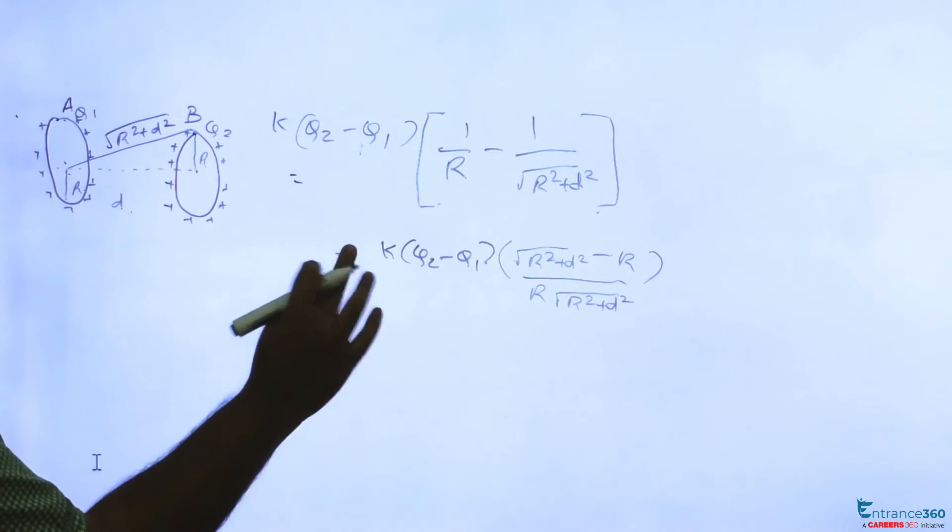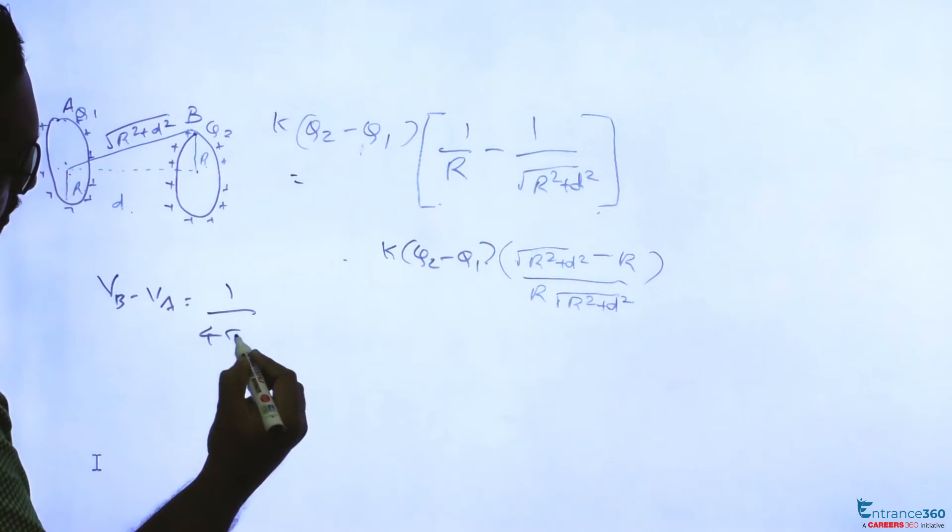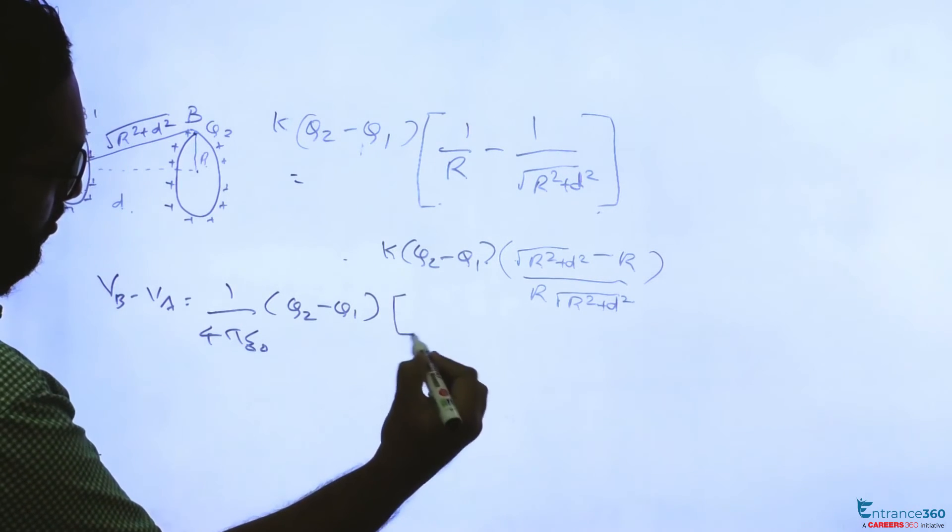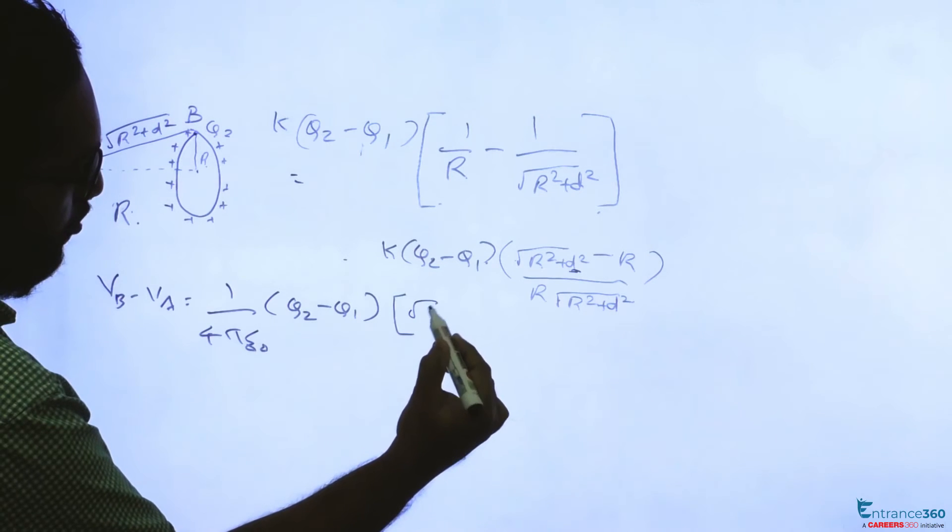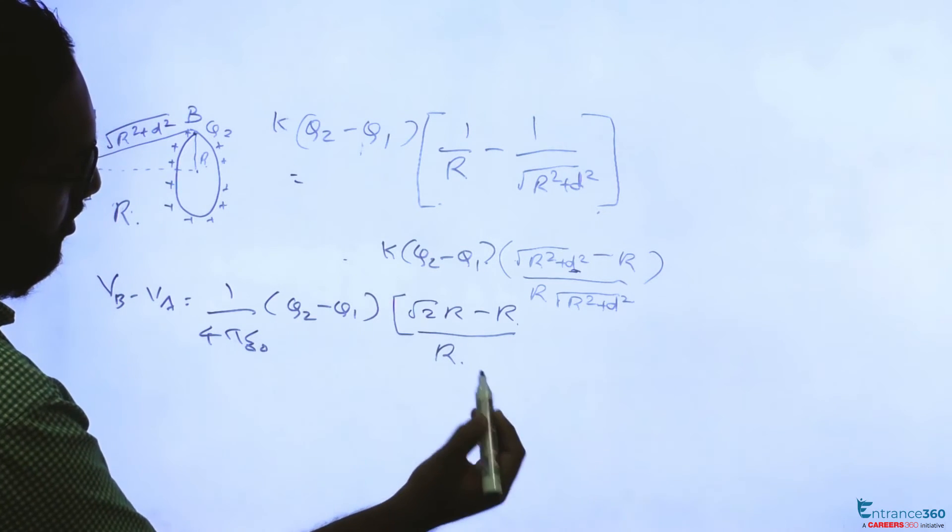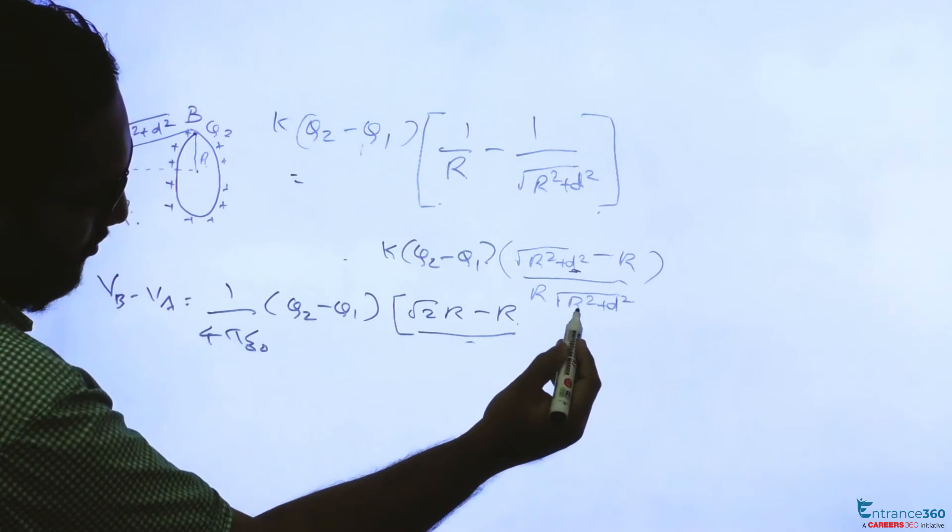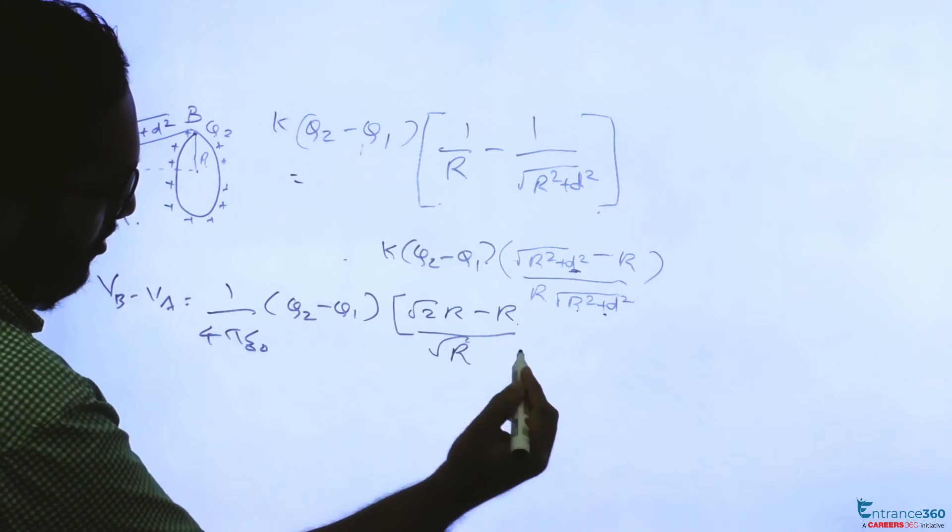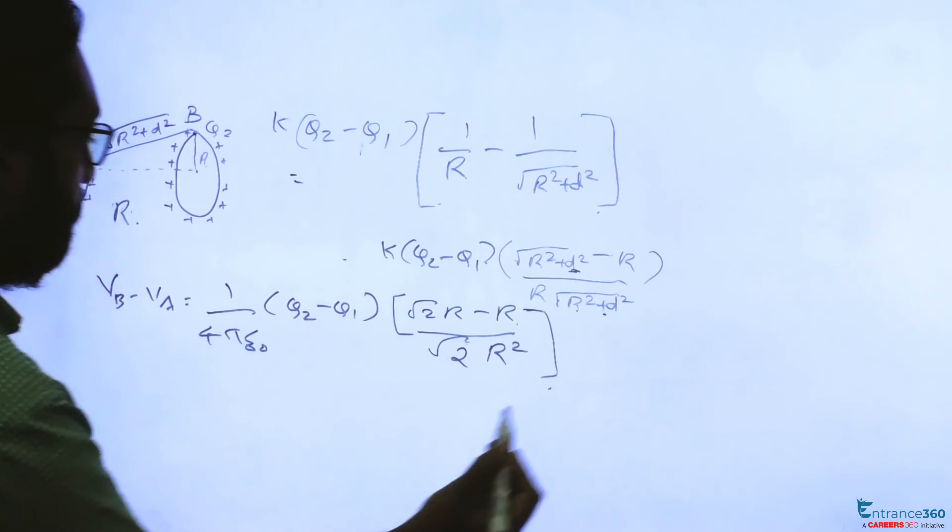So we are writing K as 1 by 4 pi epsilon 0, Q2 minus Q1. Distance D is R itself, so it is given in the equation as R, so root 2R minus R divided by R. Root 2 R square plus R square is 2 R square, so root 2 R after substituting D equal to R.